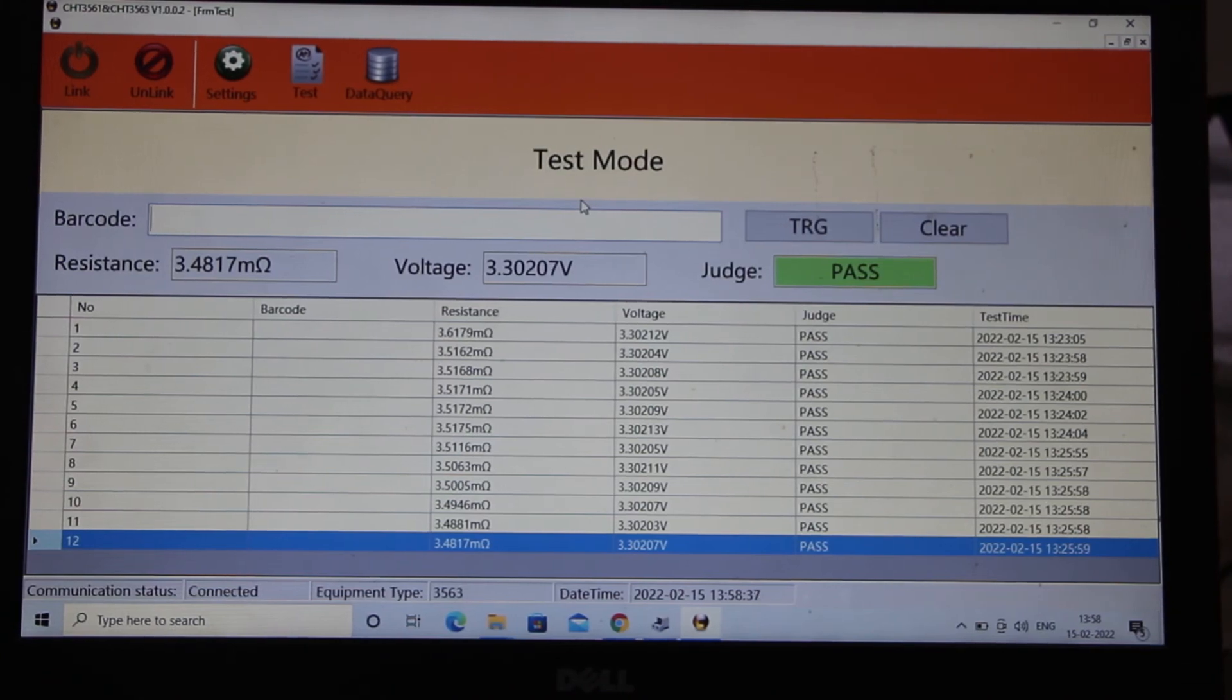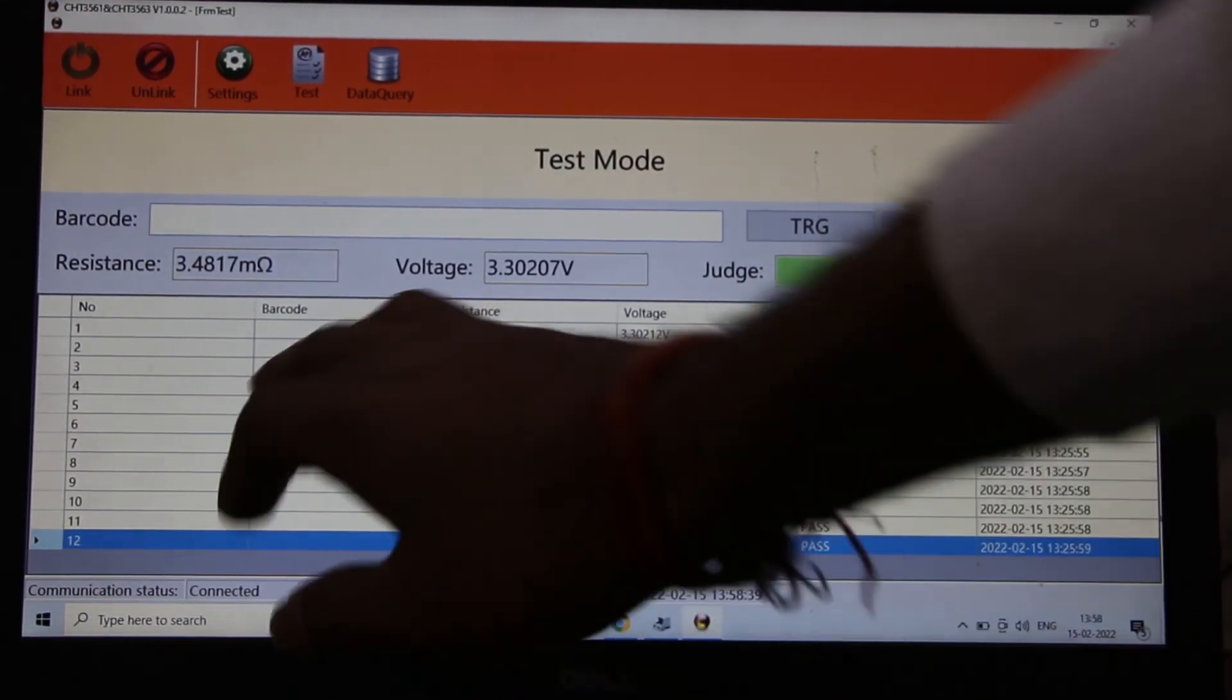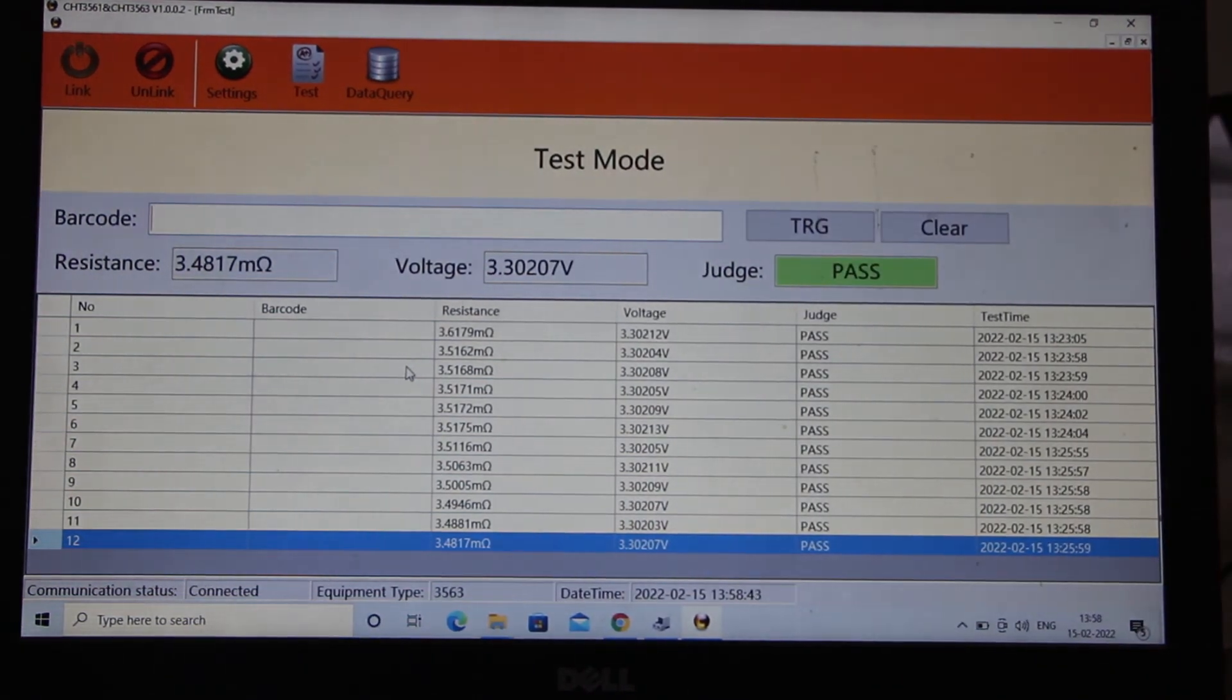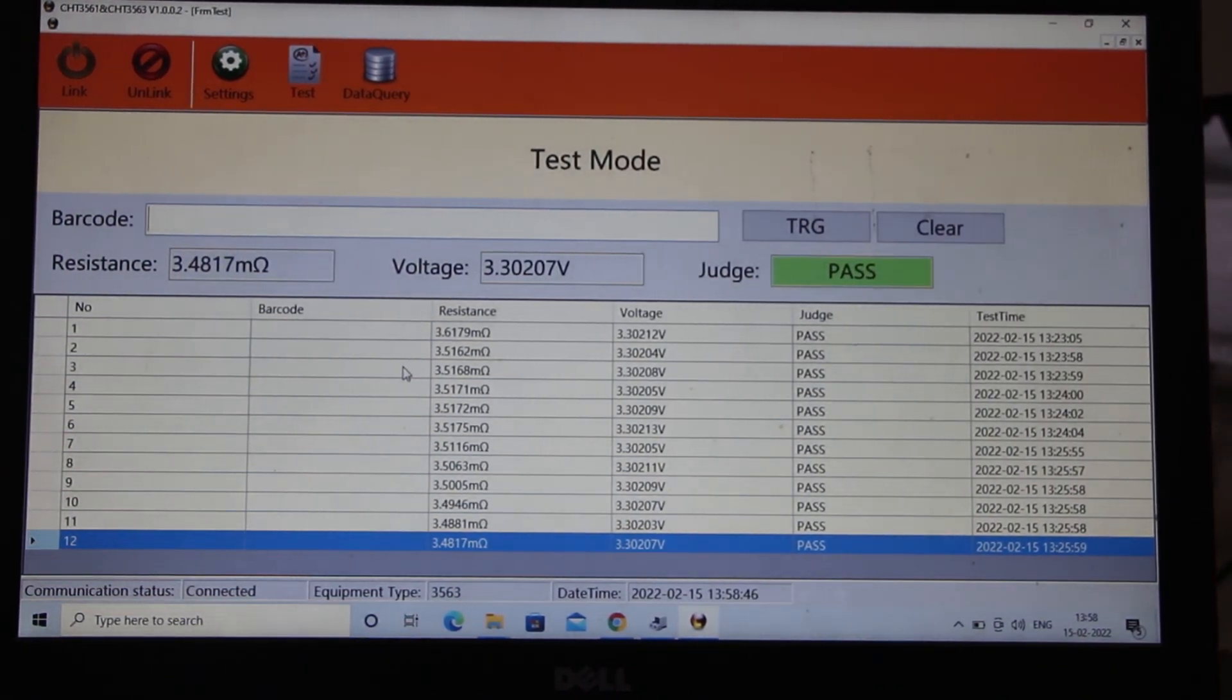That is all about this machine and one more thing there is a barcode setting if you want to test by using the barcode you can also test it by using barcode in your factory and any manufacturing plant. That is all about 3561 IR tester and if you want to come in our company for a live demo you can come anytime thanks everyone.